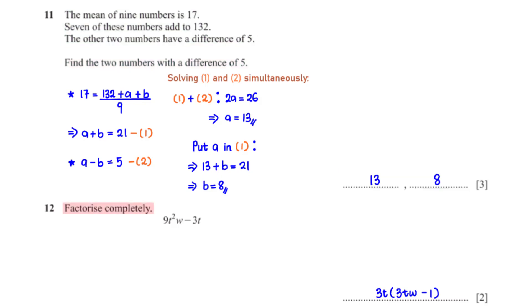Factorize completely: 9t squared w minus 3t. The terms have a common factor of 3t. When we factor that out, we are left with 3t(3tw minus 1).